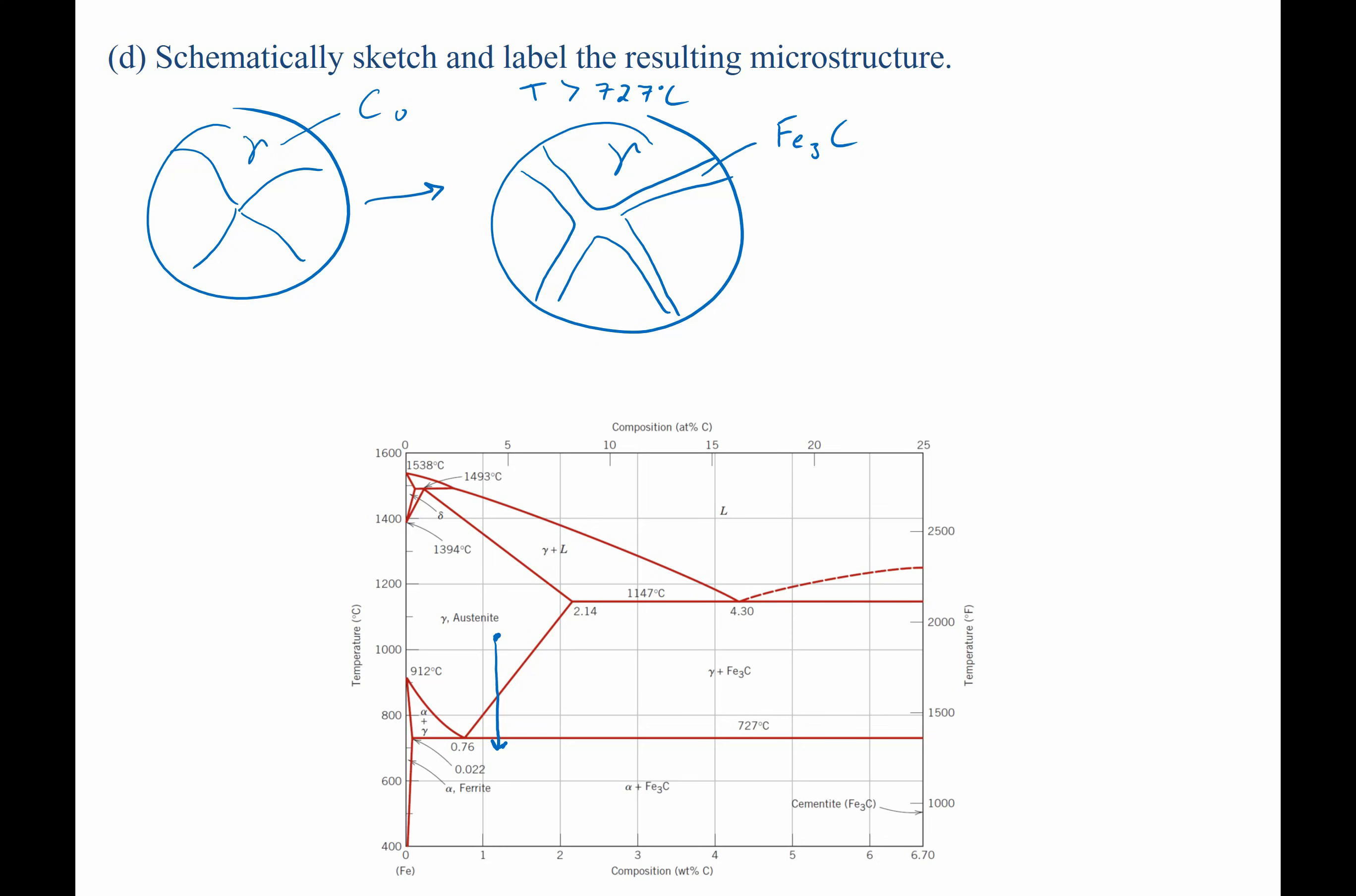As soon as you go below the eutectoid temperature, 727, we now have a structure that looks as follows. We still have the pro-eutectoid phase roughly where it was before, but now we have a mixture of lamellar ferrite and Fe3C here. So we have, this is our pearlite region, which is alpha plus Fe3C.